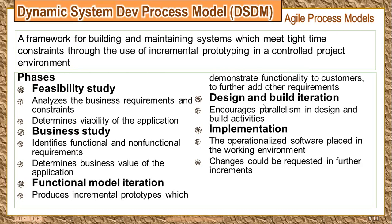The DSDM model consists of five different phases. The first phase is the feasibility phase, where basic business requirements and constraints are discussed. They also discuss the viability of the project — whether it is feasible given money constraints, time constraints, or the technical skills of the team — and whether they will be able to deliver and complete the project.